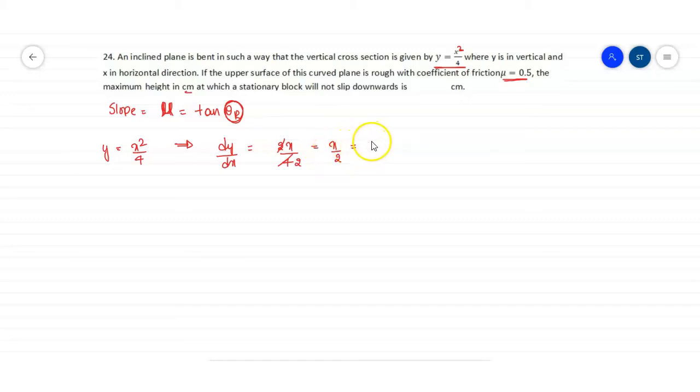If this is equals to mu, then x by 2 will be equals to 0.5. From here we can write x equals 1 centimeter, sorry, 1 meter.